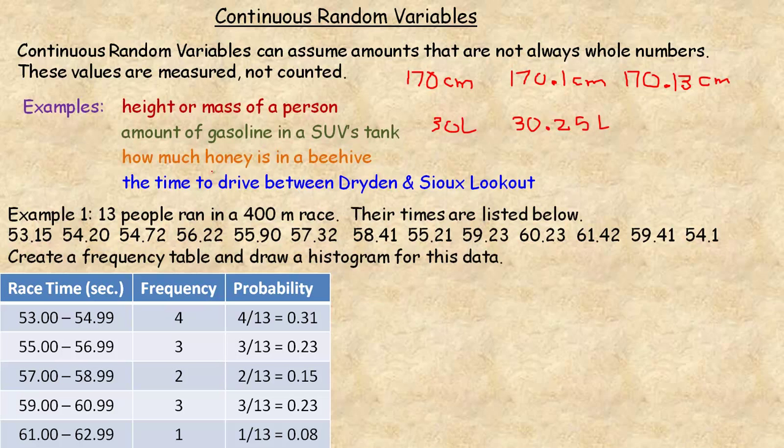In example number one, 13 people ran in a 400-meter race, and their times are listed below. What I would normally do is make a tally chart. I broke this down into categories that were basically two seconds long. So 53 to 54.99, and then 55 to 56.99, etc.